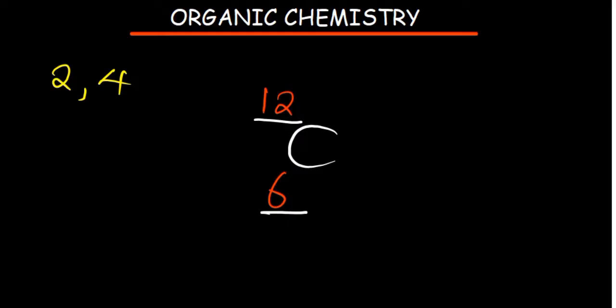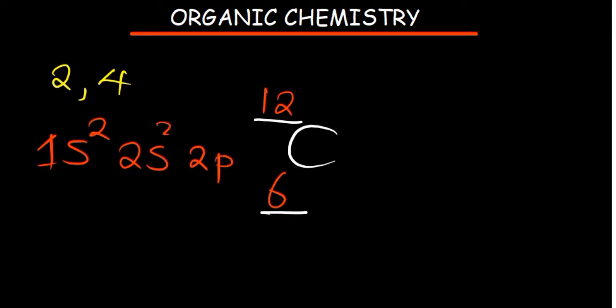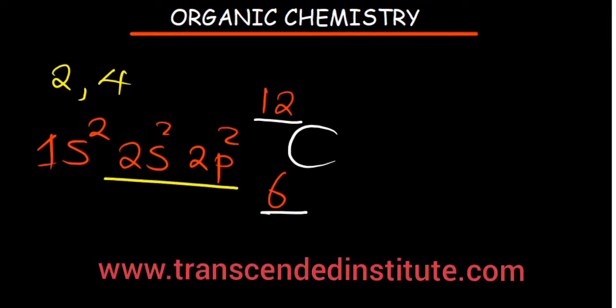So basically we have 1s2, and then we have 2s2, and then we have 2p2. We'll notice that in our outermost shell we have 2 electrons in the s-orbital and 2 electrons in the p-orbital. That's very important.